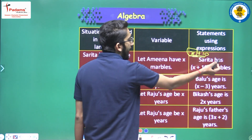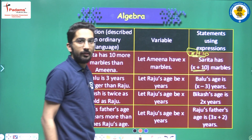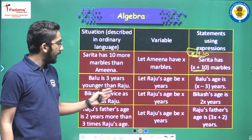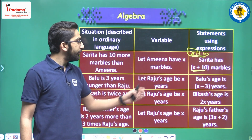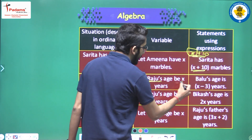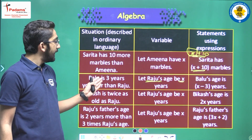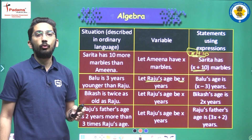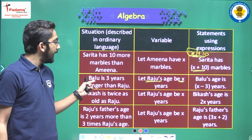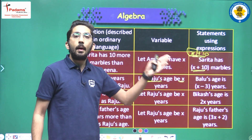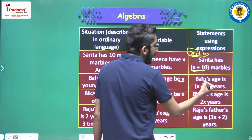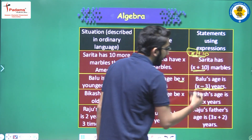Because x was the number of marbles Amina has and Sarita has 10 more marbles, that means x plus 10. So Sarita has x plus 10 marbles. Next: Baloo is three years younger than Raju. Let Raju's age be x years. Younger means smaller, so if we write Baloo's age it will be x minus three years, because Baloo is three years younger.